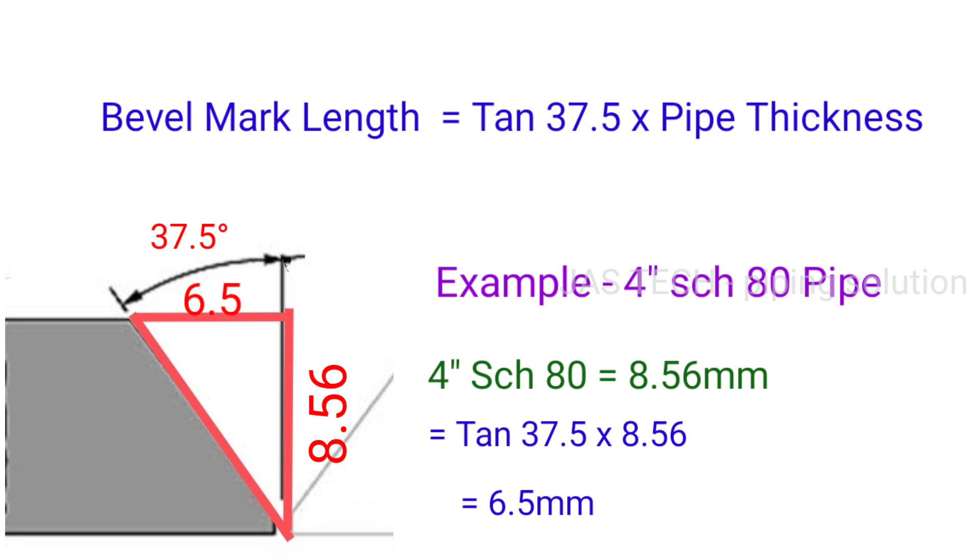8.56 mm as per schedule chart. So tan 37.5 times pipe thickness 8.56 equals 6.5 mm. That is the bevel mark length.